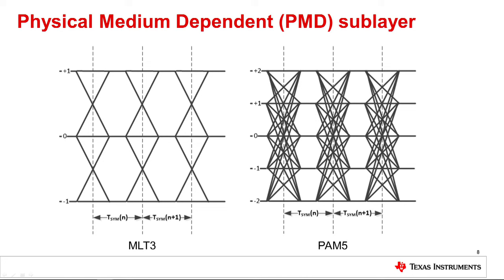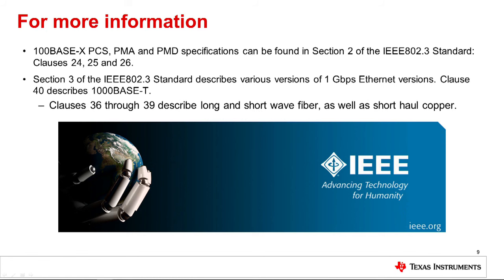More information on the different types of signaling will be explained in future videos. If the network uses copper cable, the differential signals are usually driven into a twisted pair differential impedance of 100 ohms. The IEEE 802.3 specification clauses listed here contain details on the PCS, PMA, and PMD functions in the PHY, broken down by link speed. The notation 100BaseX represents both copper, 100BaseTX, and fiber, 100BaseFX versions of the 100 Mbps specification. The PCS and PMA functions are identical for either copper or fiber and are described in clause 24 of the standard. Because the PMD depends on the physical medium, the copper and fiber versions are described in different clauses: clause 25 for copper and clause 26 for fiber. Section 3 of IEEE 802.3 covers the various versions of 1 gigabit per second Ethernet. 1000BaseT is described in clause 40, while long and short wavelength fiber versions, as well as short-haul copper, are described in clauses 36 through 39.